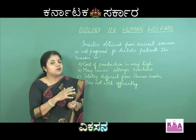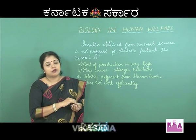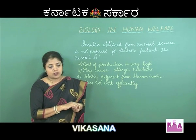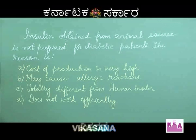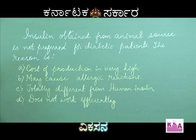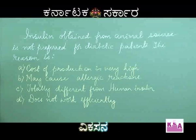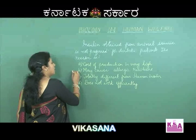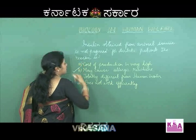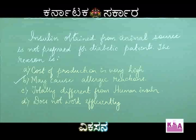That is the main reason scientists started looking into synthesizing human insulin, which is safer compared to insulin obtained from animals. So for this question, insulin obtained from other animals is not preferred because it may cause allergic reactions. Option B is the right answer.